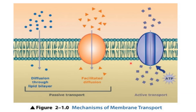Some proteins act in helping with the transport of substances. Transport can be divided into different types. On the basis of energy consumption, we divide transport across the cell membrane into two types: active type and passive type. Passive means you don't need energy. Lipid-soluble substances can easily pass through the membrane. When their concentration is different across the cell, they will pass from higher concentration to lower concentration — that is called simple diffusion.